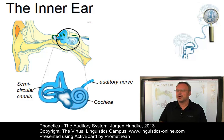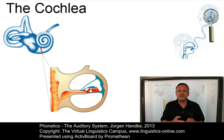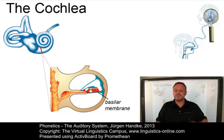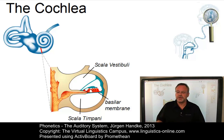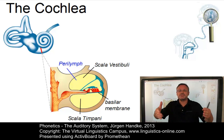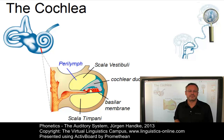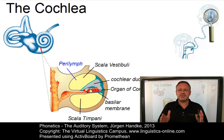Let us look at the cochlea in more detail by means of a cross-section. As we can see, the cochlea is divided into three chambers by the so-called basilar membrane. The upper chamber is the scala vestibuli and the lower chamber is the scala tympani. They are both filled with a clear viscous fluid called perilymph. Between these two chambers is the cochlear duct, which is filled with endolymph. On the basilar membrane rests the organ of Corti, which contains a systematic arrangement of hair cells which pick up the pressure movements along the basilar membrane.